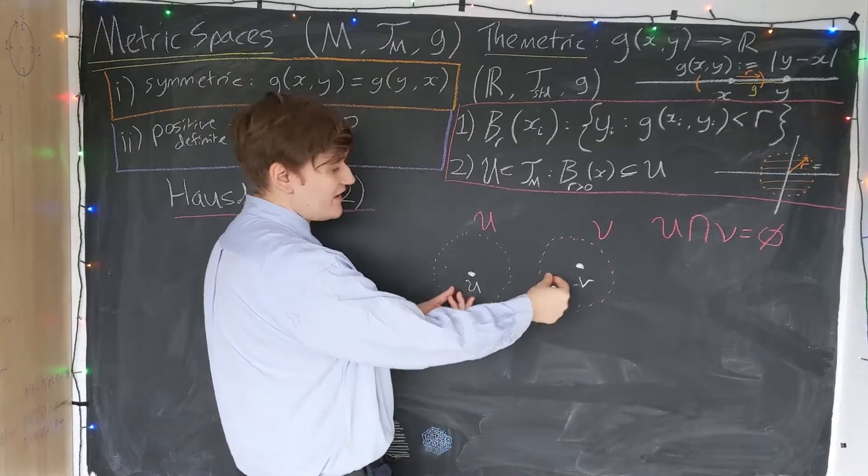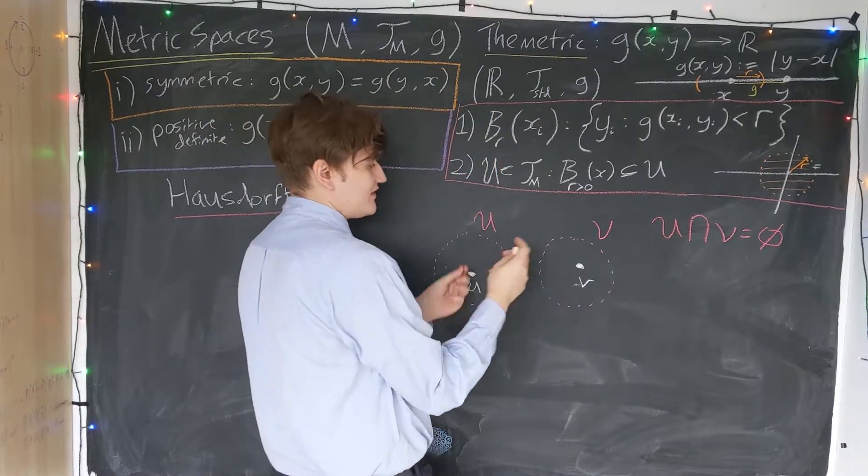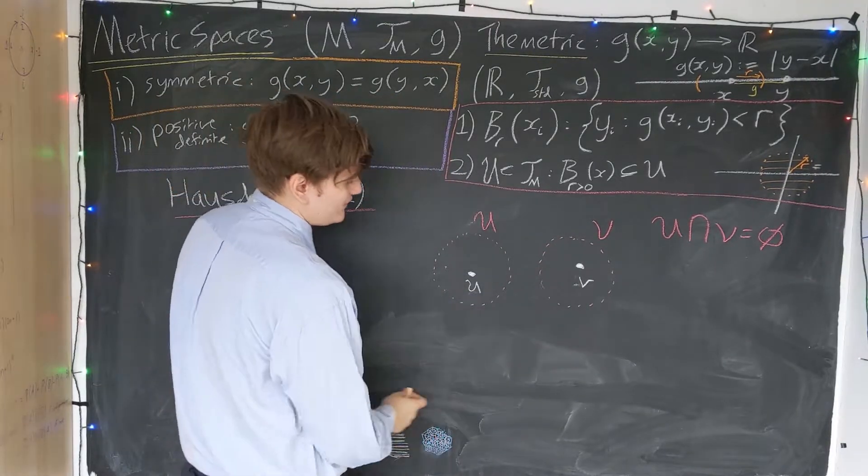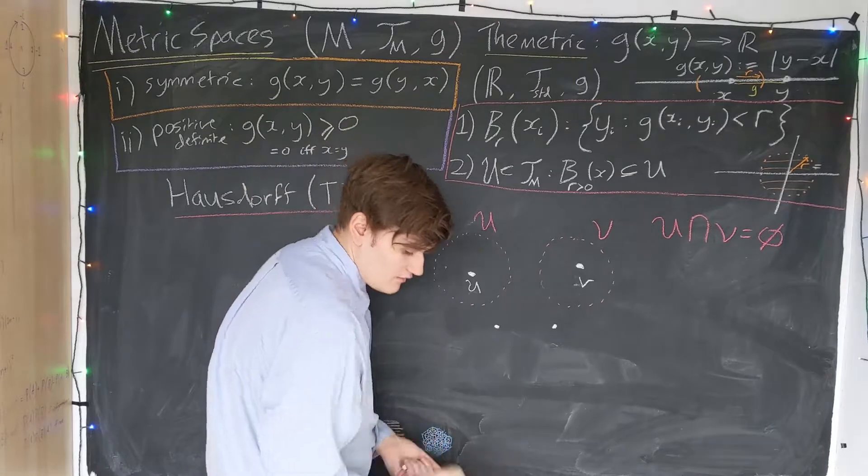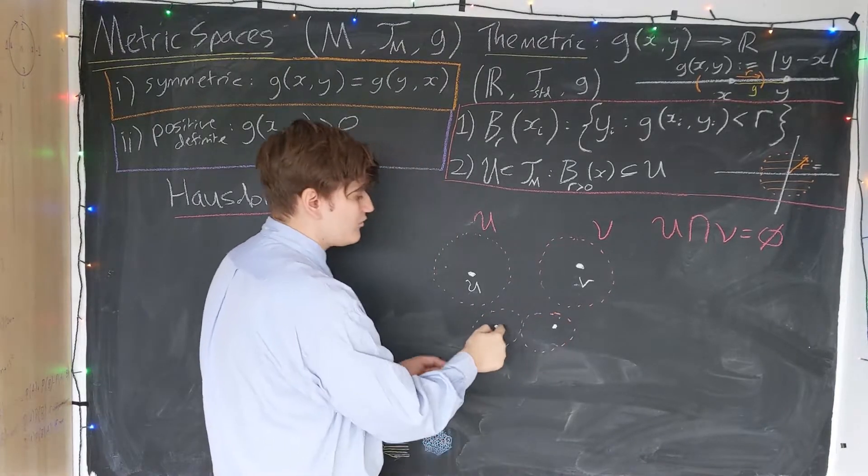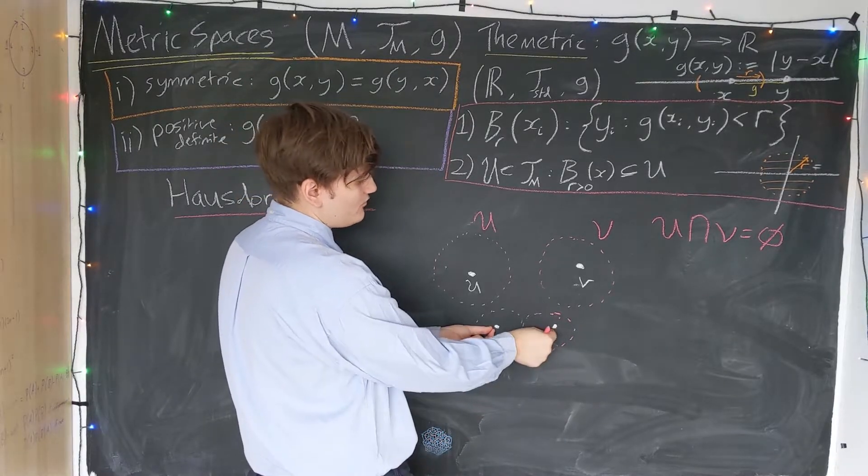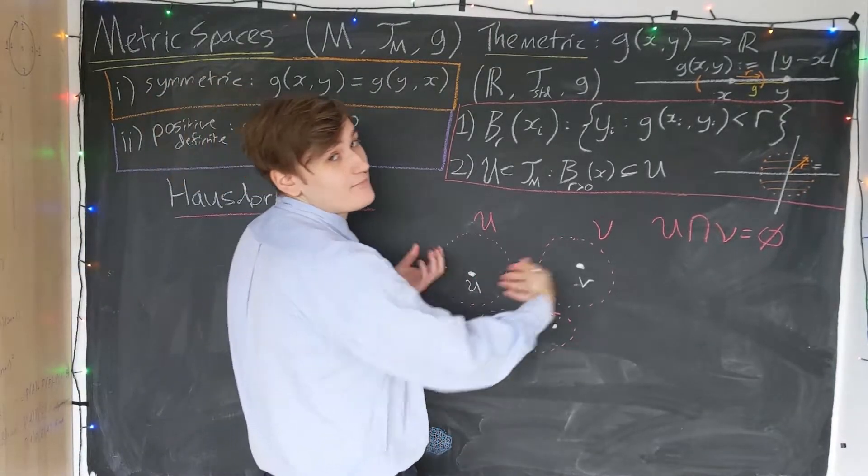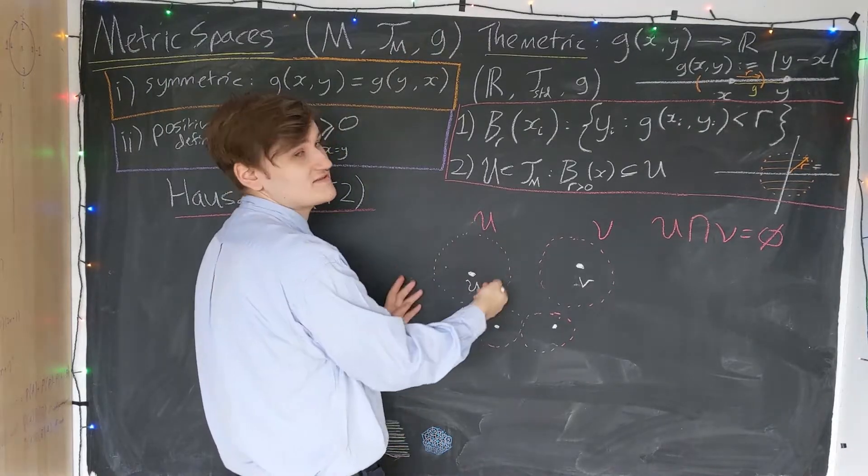What this effectively means is that if we now imagine bringing these two points closer and closer together, they could never touch, because we could then not construct two open balls around each point. So if this is one size that I could have drawn this, I can now consider zooming in on these points. No matter how close they're going to get, I'm always going to have to be able to construct an open ball around each point. The points can never touch, and one point can never lie on the boundary of an open neighborhood of the other point. So this, in effect, separates all the points of the topological space, in that they have to be contained within their own open set or open neighborhood.